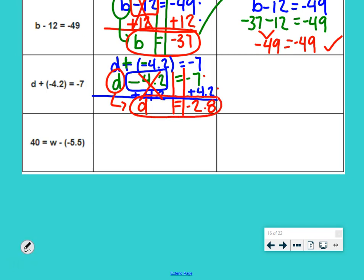We can check it. Original equation is d plus negative 4.2 equals negative 7. Put our answer in for our variable. And we get negative 2.8 plus negative 4.2 equals negative 7. Figure out if that's true by doing the operation. Negative 2.8 plus negative 4.2. I spent $2.80, and then I spent $4.20, so I spent $7. Negative 7 equals negative 7. So, our answer is correct.